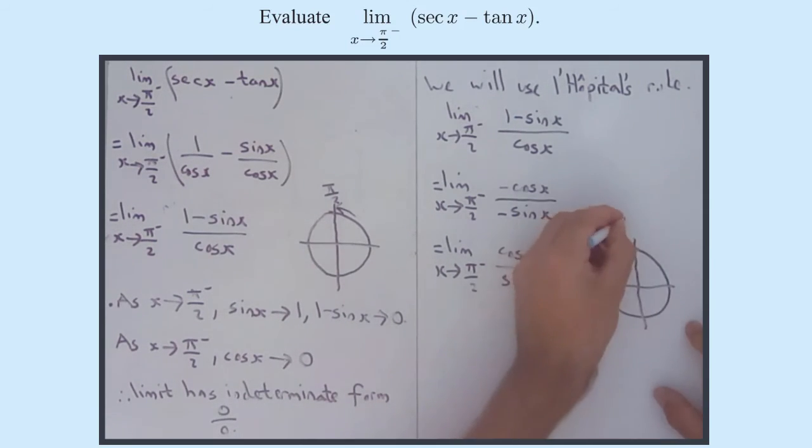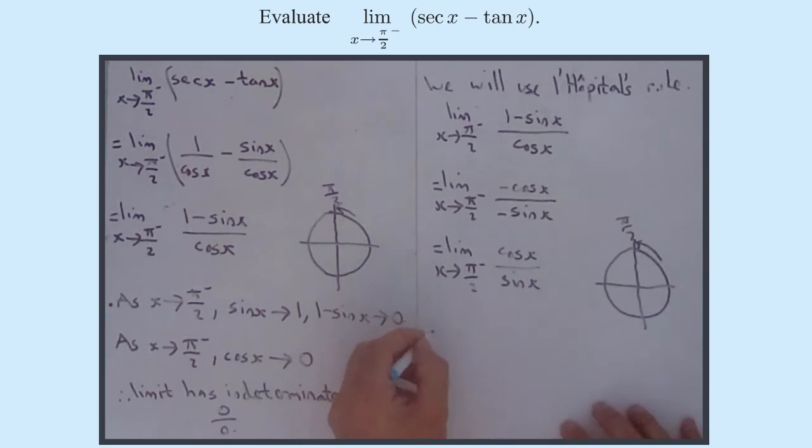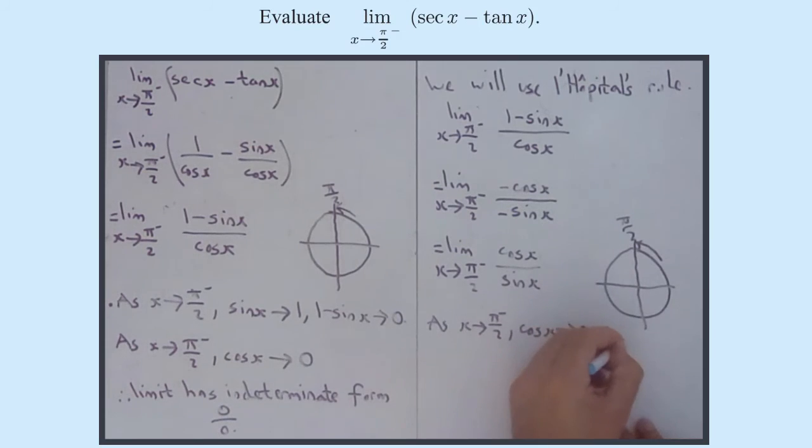Remember, pi by 2 is over here. So as we approach pi by 2, you can see that cos x approaches 0 and sine x is approaching 1. So as x approaches pi by 2 from something less than pi by 2, cos x approaches 0 but sine x approaches 1.